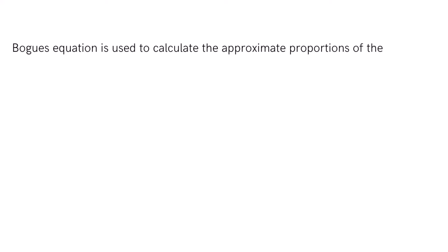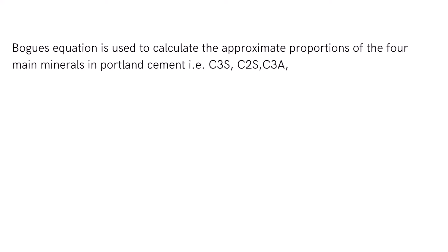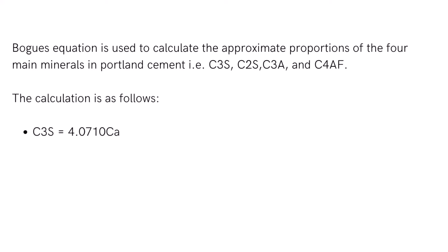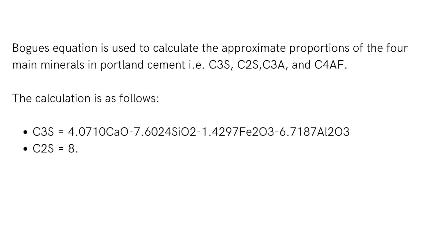There are ways in which we can determine the quantity or proportion of Bogue compounds — given by the Bogue equations. The four minerals in Portland cement, that is C3S, C2S, C3A, and C4AF, can be calculated by the following equations.